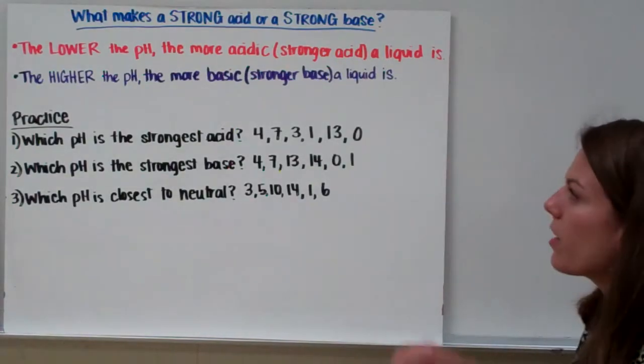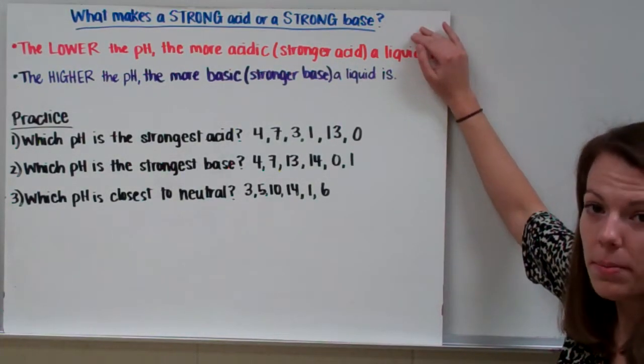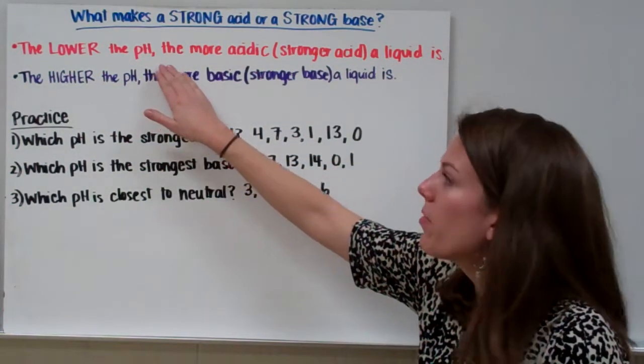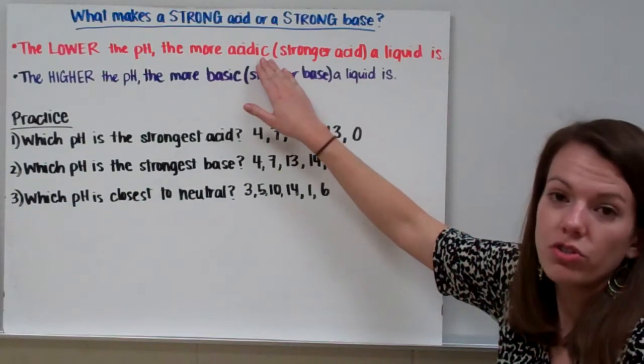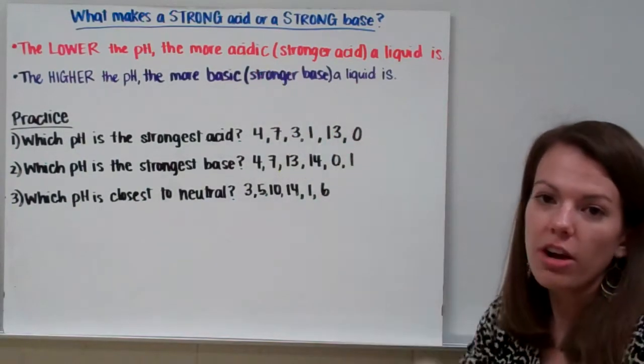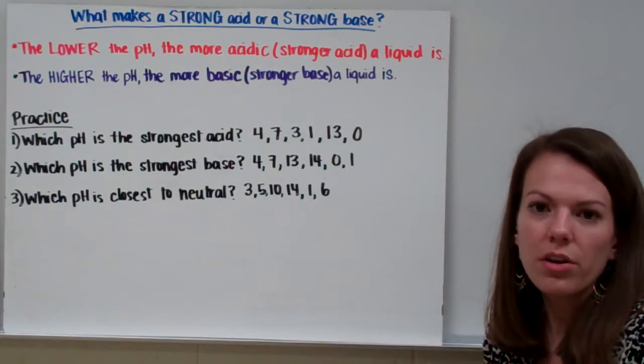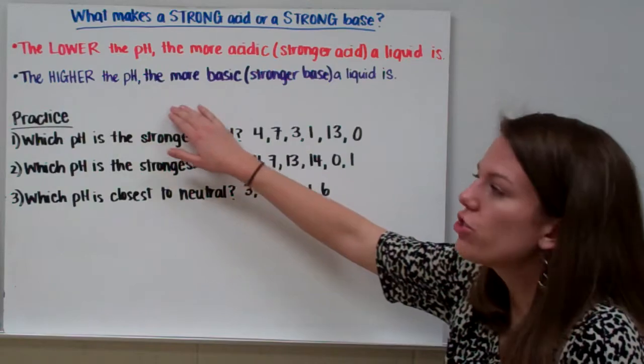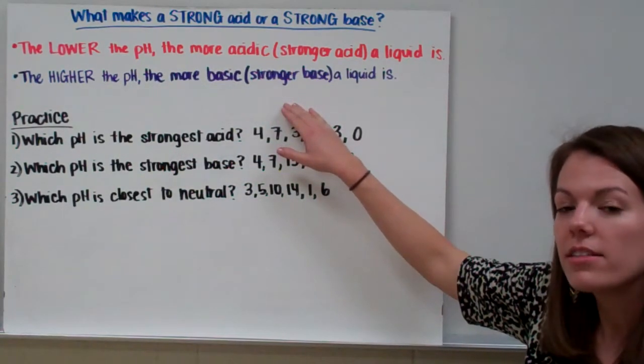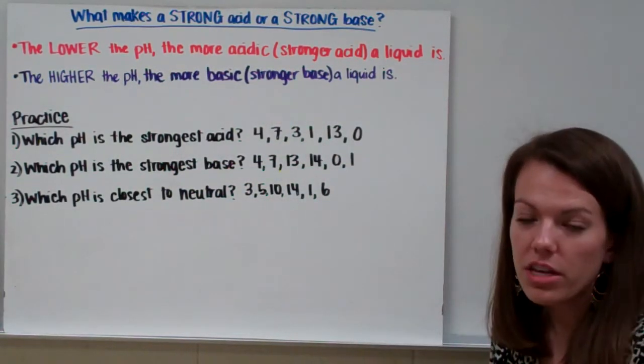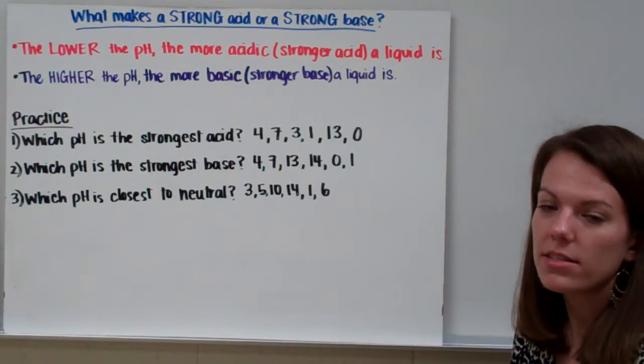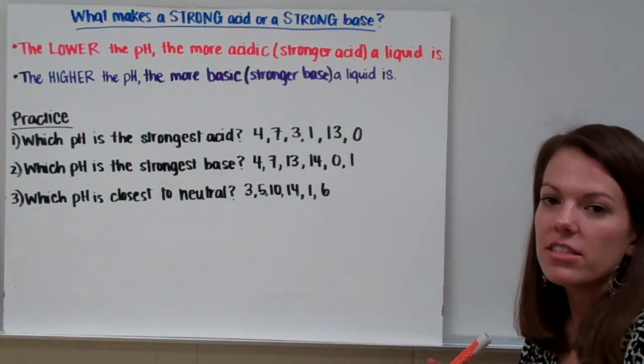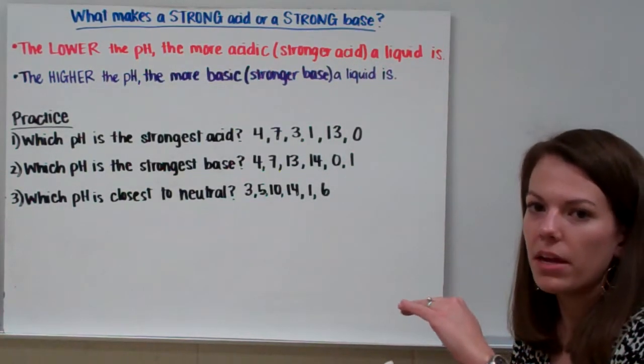Alright, let's discuss what actually makes a strong acid or a strong base. The lower the pH, so the closer you get to 0, the more acidic a substance is, the stronger the acid it is. So strong acids have pHs close to 0, like 1, 2, 0. The higher the pH, the stronger the base it is, so the more basic it is. So if the pH is close to 14, the closer you get to 14, the stronger the base it is. So at the two ends of the spectrum, 14 is a strong base and 0 is a strong acid with 7 in the middle being neutral.